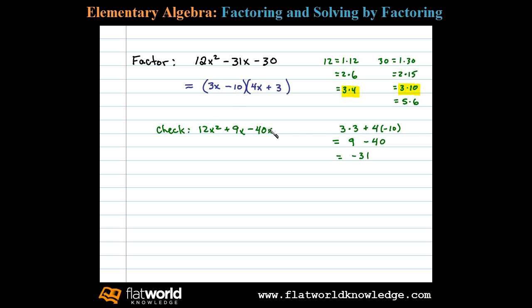That simplifies to 12x squared, 9x minus 40x is negative 31x minus 30. So you can see our factorization checks out.